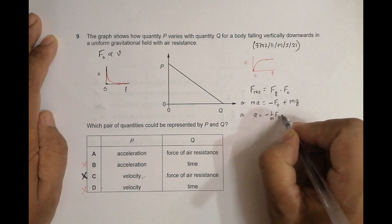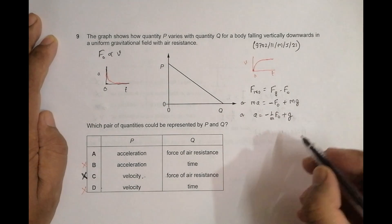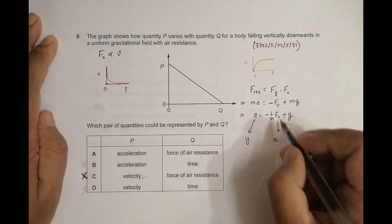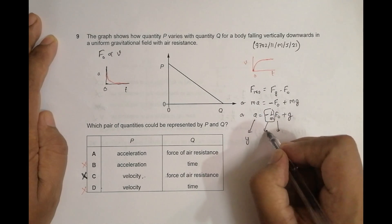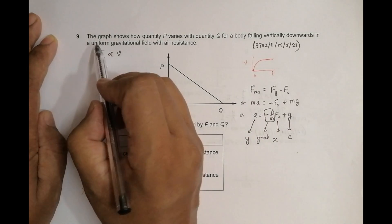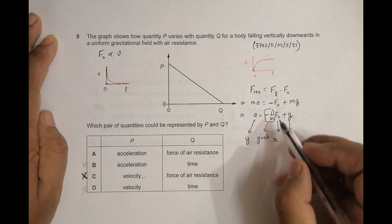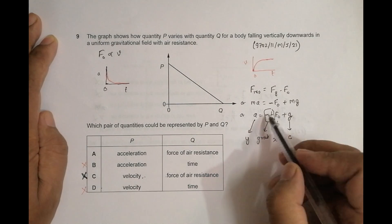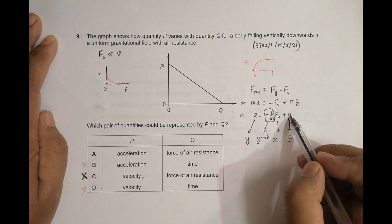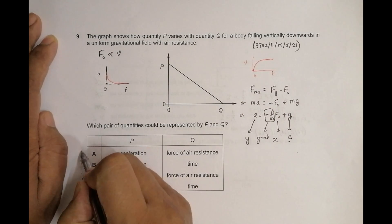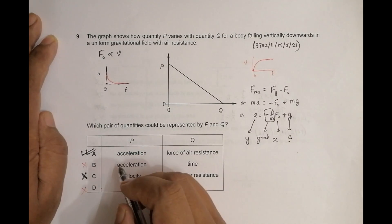If I draw fo in the x-axis and a in the y-axis, -1/m will be equal to the gradient and g will be equal to the intercept. Since it's a uniform field, g is constant, and mass is also constant, so the gradient is constant. This should be a straight line with negative slope and positive intercept, which matches the given graph. So it's the graph between acceleration and force of air resistance.